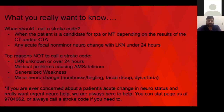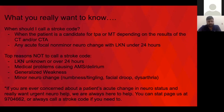Anything with last normal over 24 hours, we aren't really going to act on acutely. Reasons not to call a stroke code: last normal unknown or over 24 hours, medical problems causing altered mental status or delirium, generalized non-focal weakness that's the same on left and right, or a minor neurological change — just numbness, just facial droop, just dysarthria without motor weakness, aphasia, gaze deviation, or visual loss. Those patients are typically not candidates for acute intervention. You could stat-page or request a neuro consult instead. But if ever concerned, you can always call us.